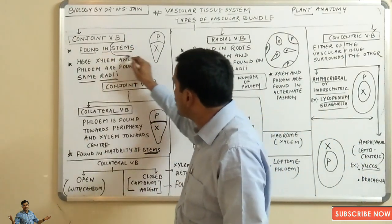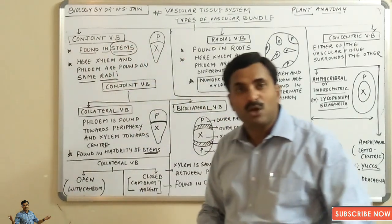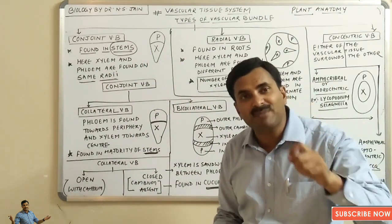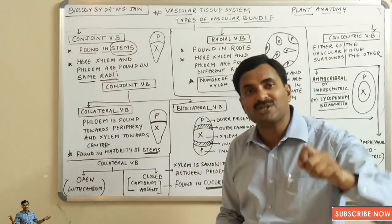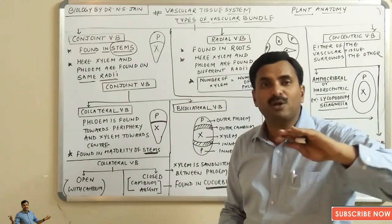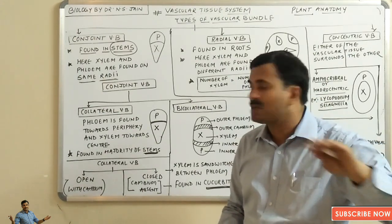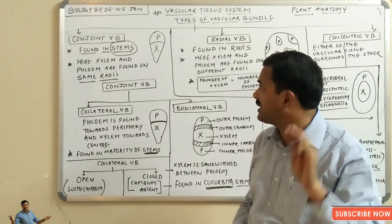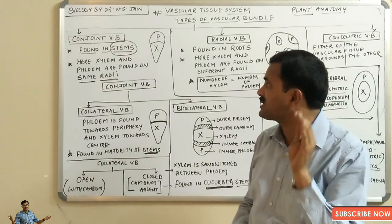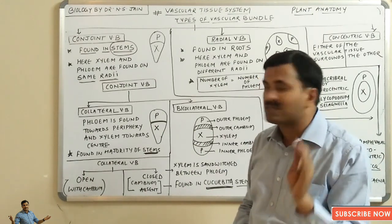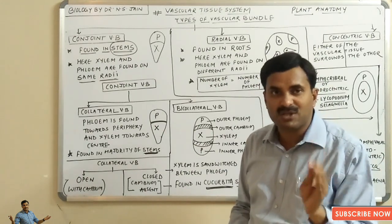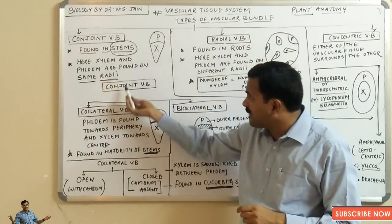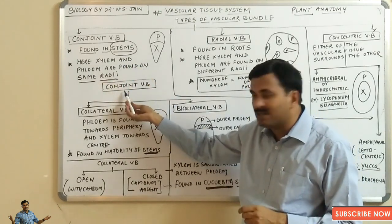The conjoint vascular bundle is a feature of all stems — whether the stem is a monocot stem or a dicot stem. All stems have conjoint vascular bundles; this is the universal feature of stems.